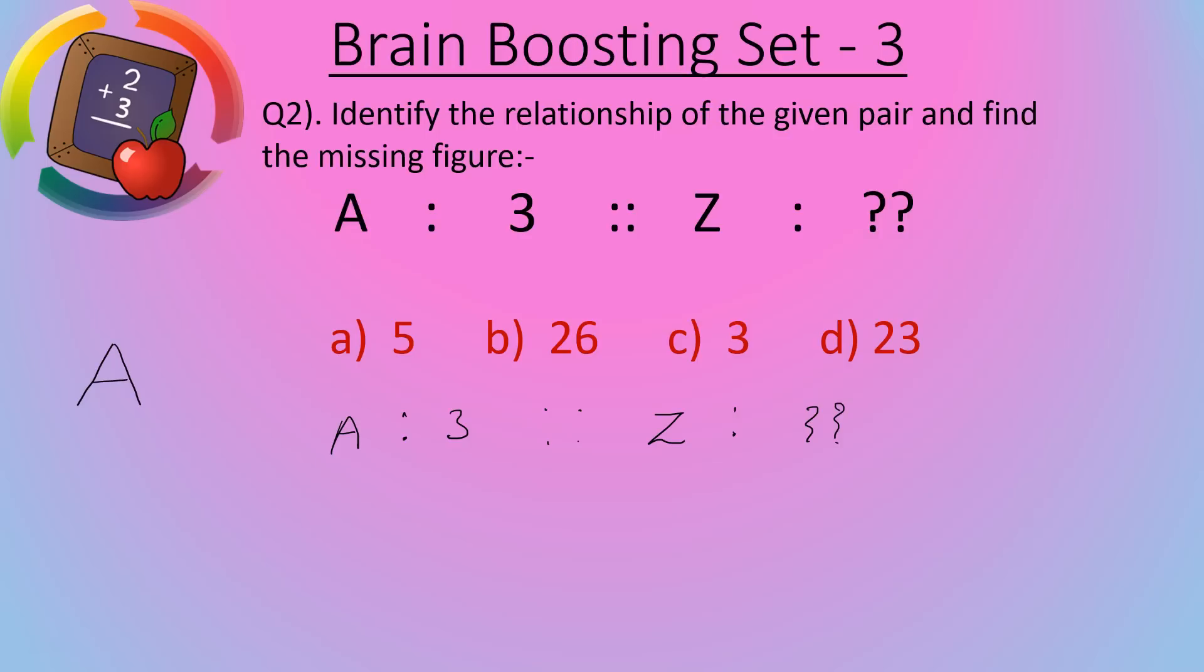Then how many lines are there? 1, 2 and 3. 3 lines are there. So A is represented by 3. So Z, in Z how many lines are there? 1, 2 and 3. So Z is also represented by 3.